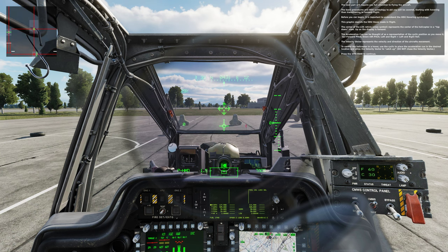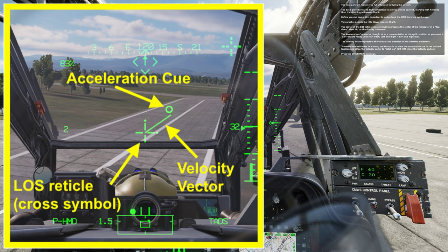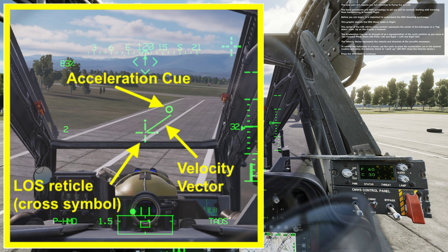The next part will require your full attention to flying the aircraft. The basic procedures and HDU symbology to aid you will be covered, starting with hovering, then transitioning to forward flight. Before you can begin, it is important to understand the HDU hovering symbology. This graphic depicts the HDU hover mode in flight. The center of the line of sight rectangle represents the center of the helicopter in a top-down view. Up on the display is forward.